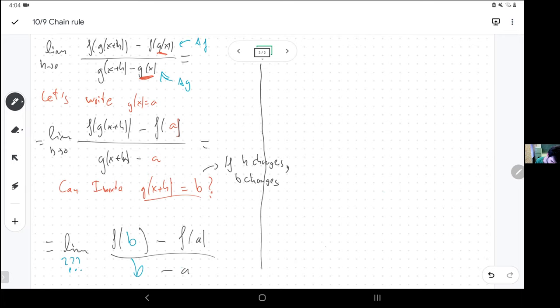So really the question is, what is happening to this new quantity as h approaches zero. In other words, what is the limit as h approaches zero of g of x plus h.